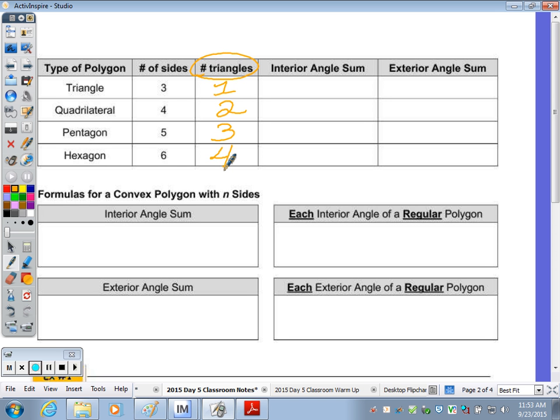The interior angle sum, go ahead and fill that in if you can recall. We started with 180, and then to move to the next, we just added 180. Every polygon had the same exterior angle sum of 360 degrees.